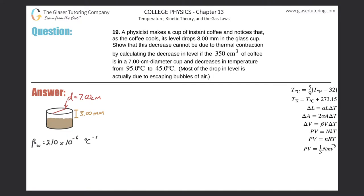Problem 19: a physicist makes a cup of instant coffee and notices that as the coffee cools its level drops three millimeters in the glass cup. We need to show this decrease cannot be due to thermal contraction by calculating the decrease in level if 350 cubic centimeters of coffee is in a seven centimeter diameter cup and decreases in temperature from 95 to 45 degrees.